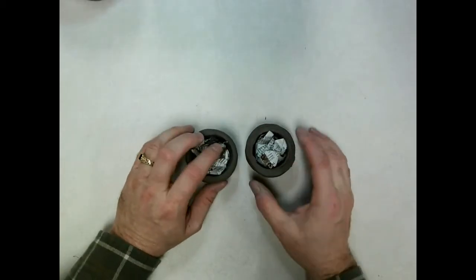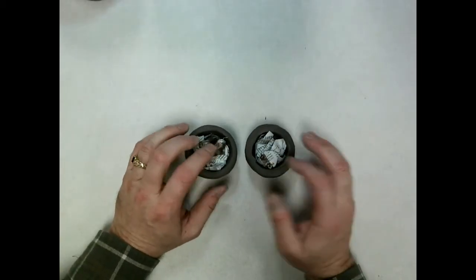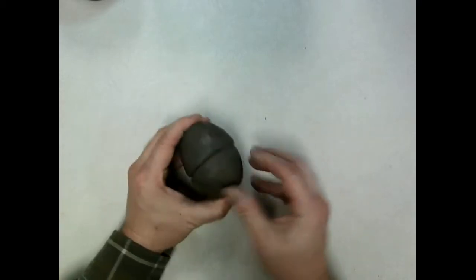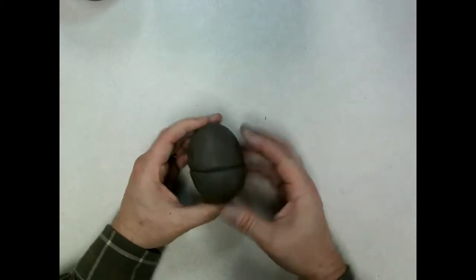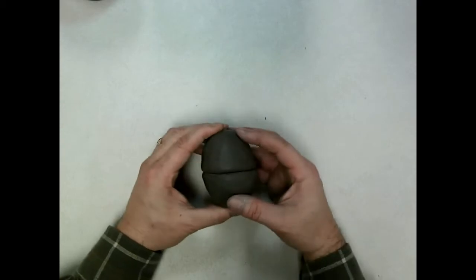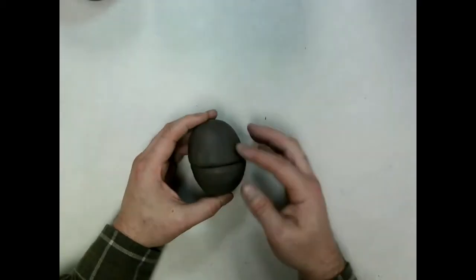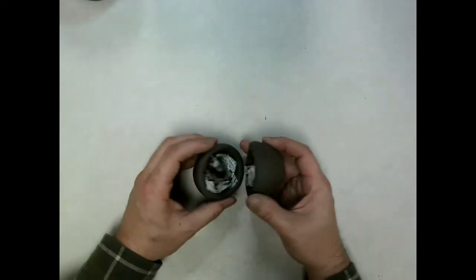The reason I put the newspaper in there is to act as a support on the inside of the clay pot, so that when I put them together and I start blending this all together and pushing on the sides, that it doesn't collapse on me and create indentations in places that I don't want on my clay rattle.